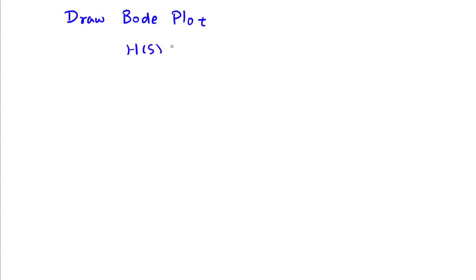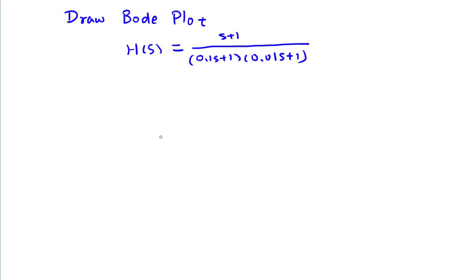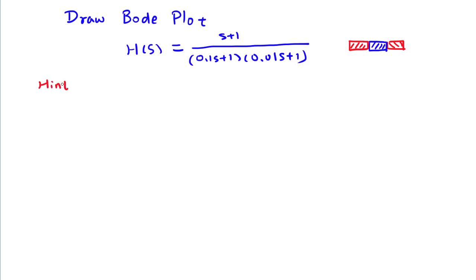Hello, here I'm providing the solutions to the Bode plot worksheet problem we started in class. You are asked to sketch by hand a system characterized by a complicated transfer function. We know a transfer function can be divided into simpler building blocks. The hint here is to divide the transfer function into three smaller building blocks G1, G2, and G3.